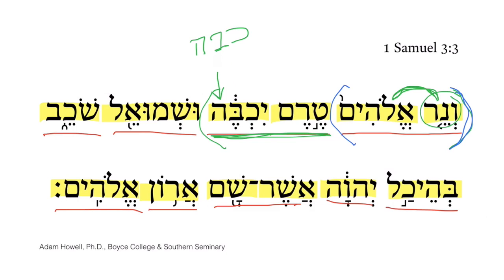Kavah is an R3-he verb, meaning the third root letter is a he. In the imperfect of the qal, the R3-he verbs take a segol as the theme vowel, as we have here, and then a hiriq as the performative vowel. The dagesh in the beit here is not indicative of an intensive stem — not a pi'el, pu'al, or hithpa'el — it's not an intensive dagesh. Rather, it's simply a dagesh lene, in a begadkefat letter, the beit, preceded by the absence of sound indicated by a silent shewa.